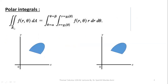What is a polar integral? On the left-hand side, you can see a polar integral written in general form: double integral over the region R of F(r, theta) dA. In polar integral, we have a function of two variables r and theta, and dA is a small patch of the region.